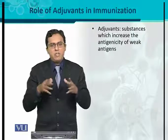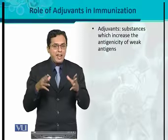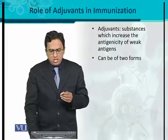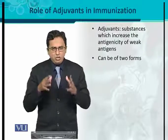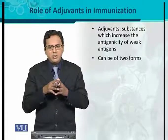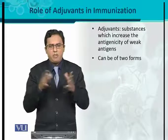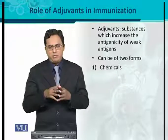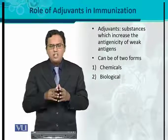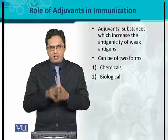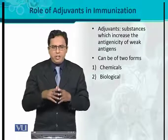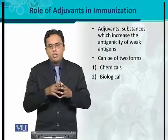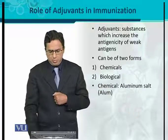Different compounds or substances are used for this purpose, and these are called adjuvants. In immunization, various adjuvants are used. These adjuvants can be used in two different forms: the first is chemical adjuvants, and the second is biological adjuvants — different biological compounds, molecules, or organisms used for this particular purpose.